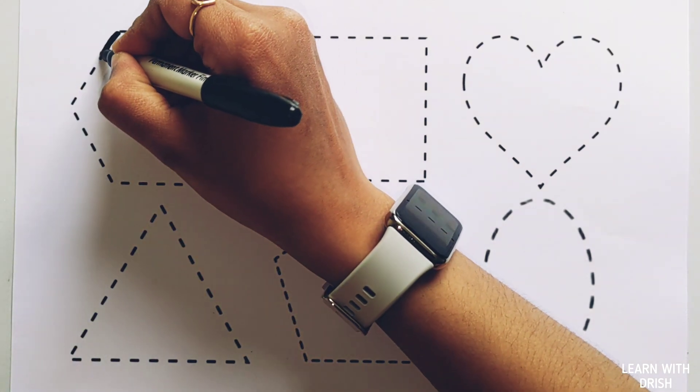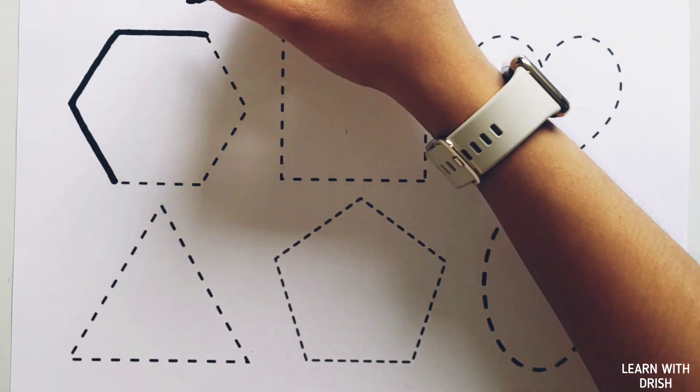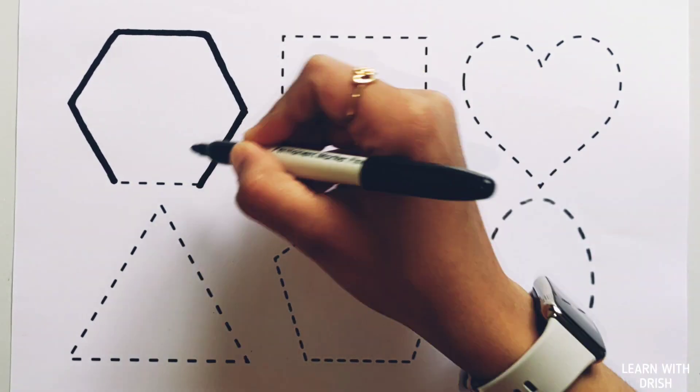Now let's draw the shapes. Excellent! Hexagon has six sides.